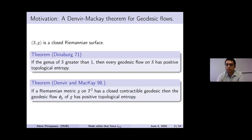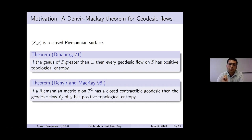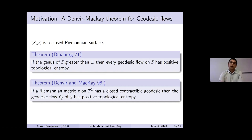So we need some condition to force topological entropy. One of the conditions is given by Deninger and Mackay: if you take any Riemannian metric with a closed contractible geodesic, then the geodesic flow always has positive topological entropy. The existence of this closed contractible geodesic forces positivity of topological entropy.